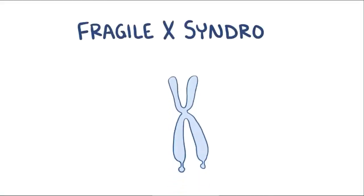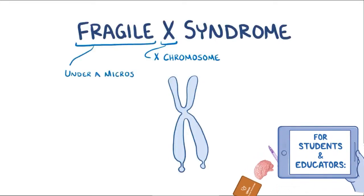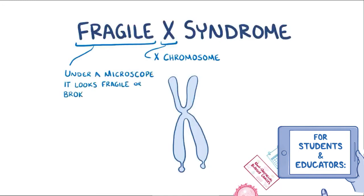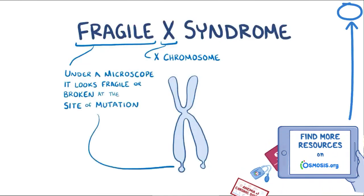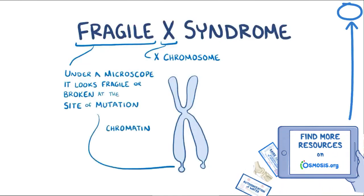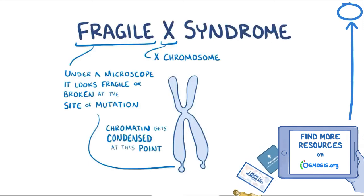With Fragile X syndrome, sometimes just called Fragile X, the X refers to the X chromosome where the disease gene is located. The fragile refers to the fact that under a microscope, the X chromosome looks fragile or broken at the site of the mutation. That's because the chromatin which makes up the chromosome gets really condensed at that point.